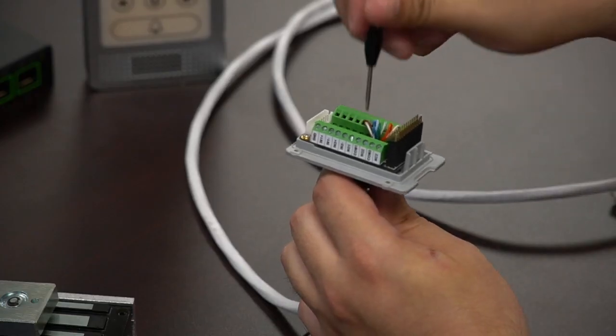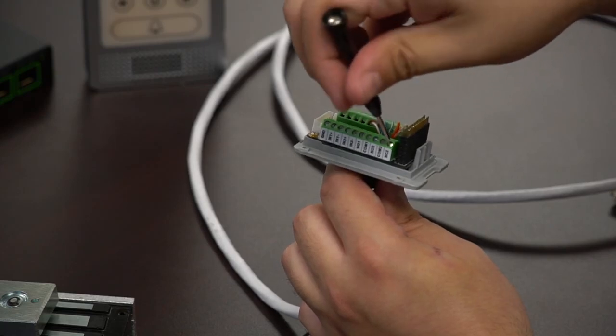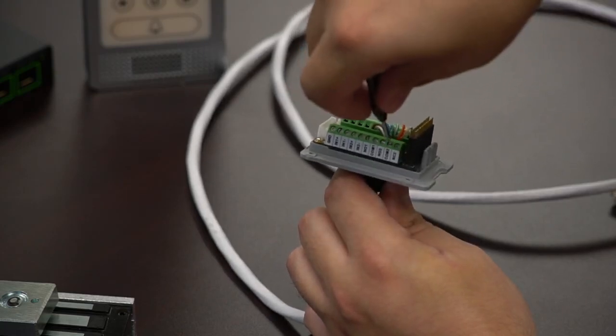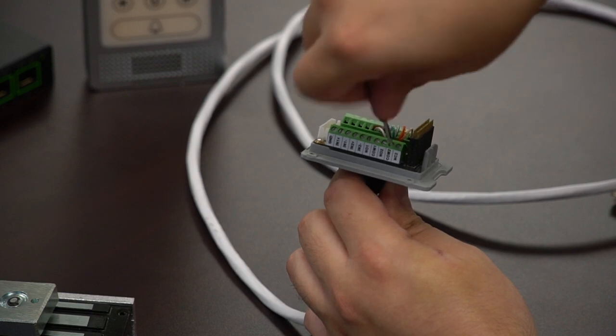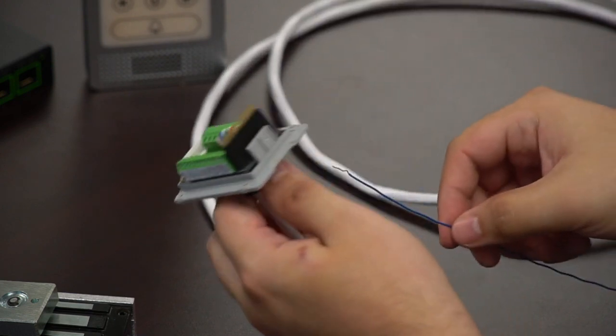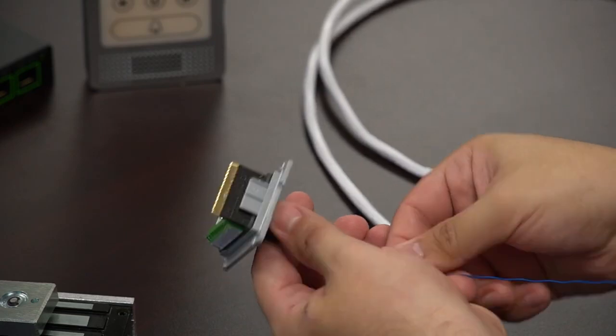Next, we're going to go ahead and start with the rest of our wiring. Now we will be doing the failsafe electric strike PoE powering wire diagram. So we are going to be loosening the NC2 and COM2 connections.